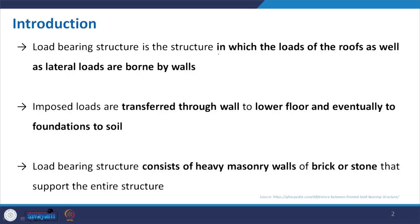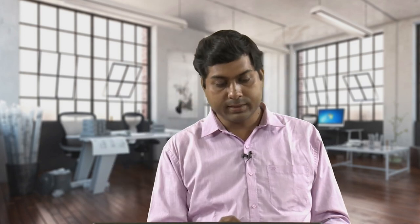In a load bearing structure, the load of the slab or roof is carried out and transmitted through the wall. The wall is the main load-bearing element of the structural system. Two kinds of loads are involved: gravity load, which comes from the slab or upper floors and transmits through the wall to the foundation, and lateral load such as wind load and rain load, which is also taken care of by the wall.